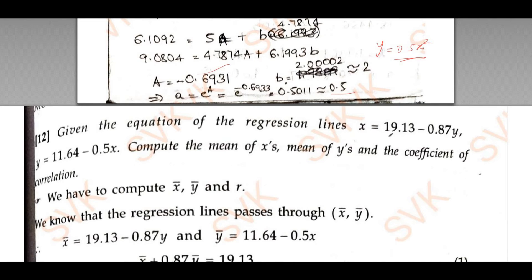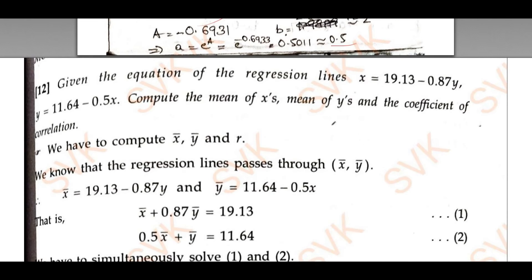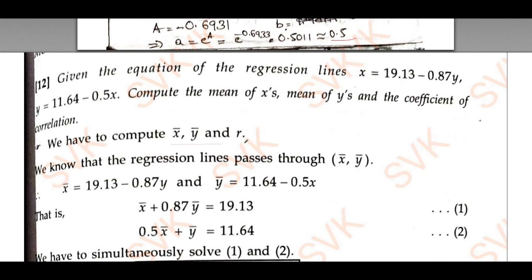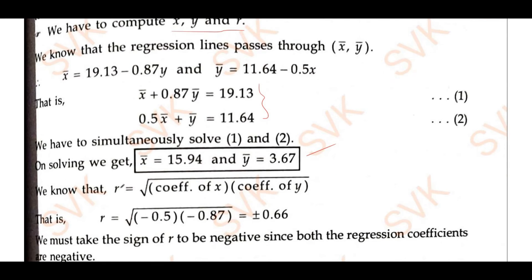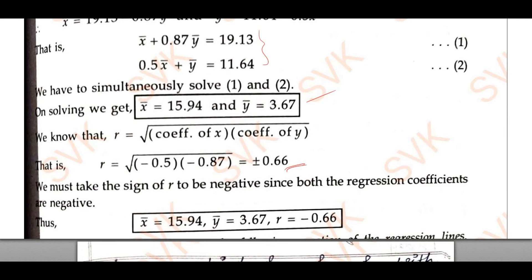Similarly, given the correlation regression lines, using these regression lines I need to find the mean of x and y and also the correlation coefficient. By solving these two simultaneous equations I get x̄ and ȳ. After getting x̄ and ȳ, I can find r directly using the square root of the product of the coefficients of x and y, getting ±0.66.